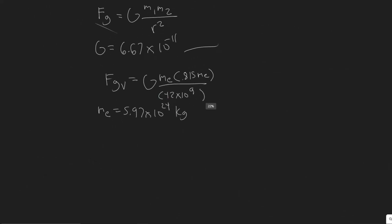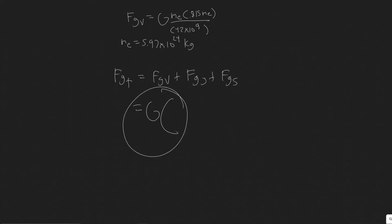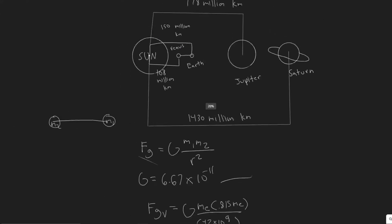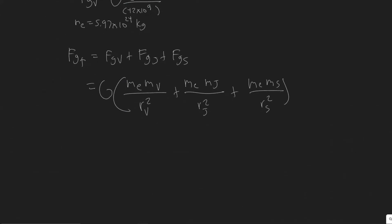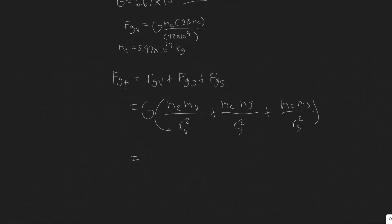The total force is FG_total = FGV + FGJ + FGS. We can factor out G from all three terms, giving: G × [Me·Mv / rv² + Me·Mj / rj² + Me·Ms / rs²], where rv, rj, and rs are the distances between Earth and each planet respectively. Now we just plug everything into this combined formula.